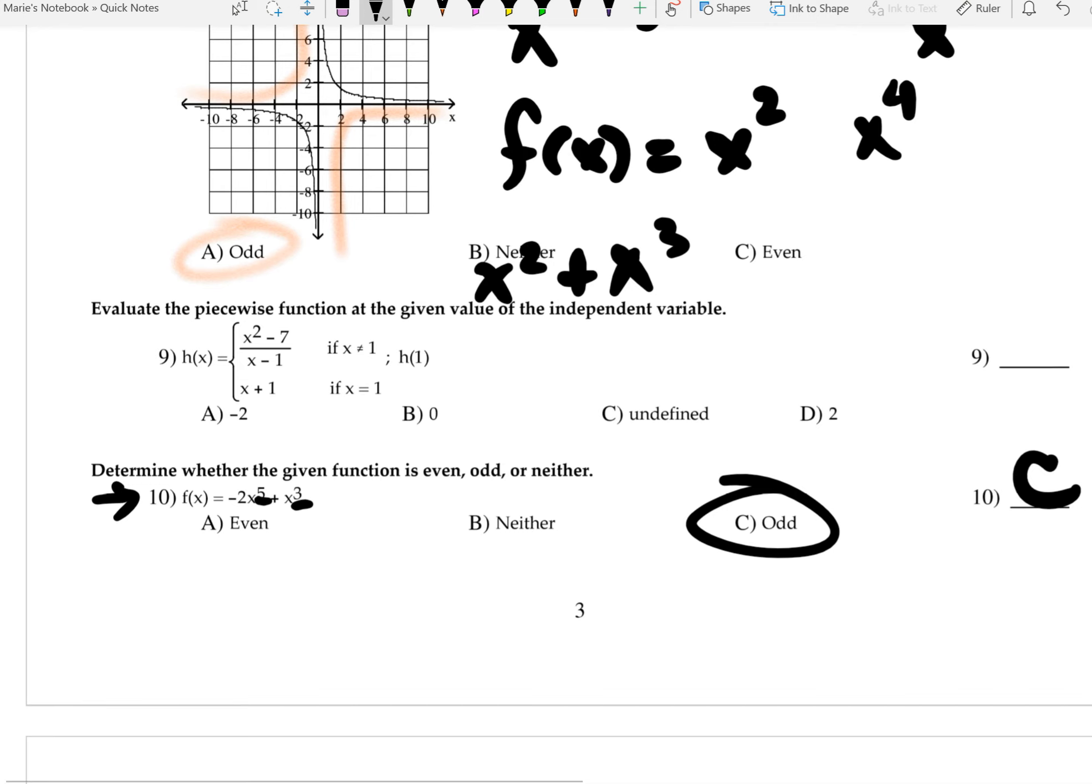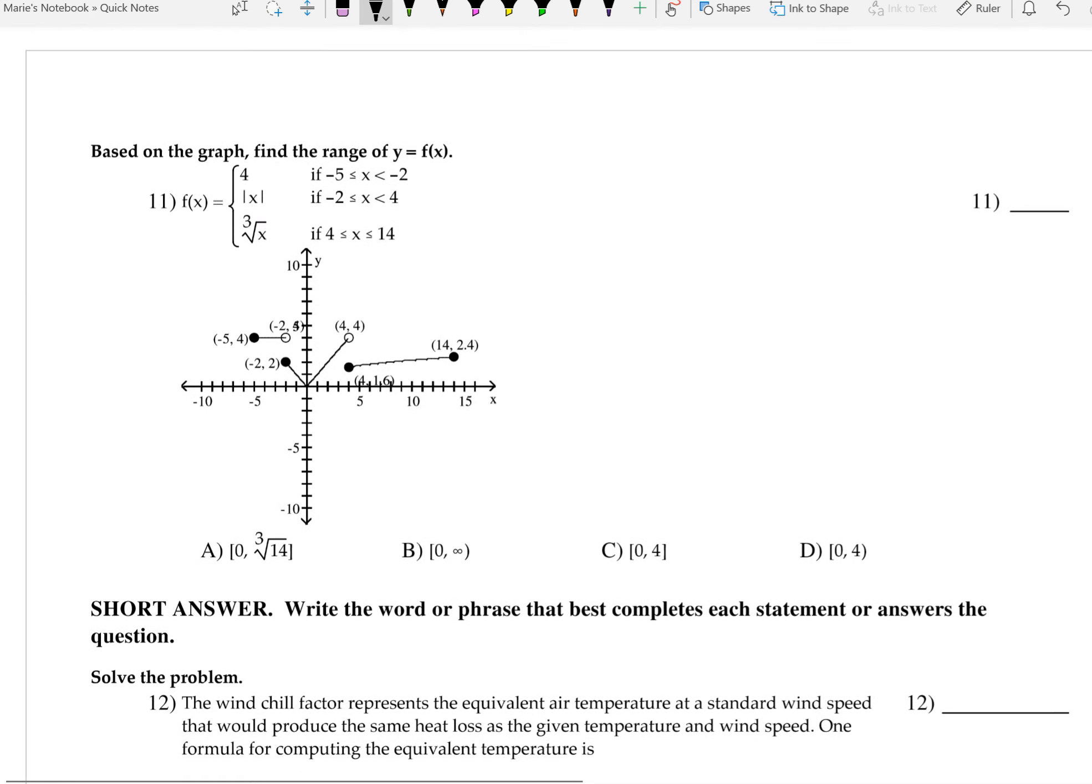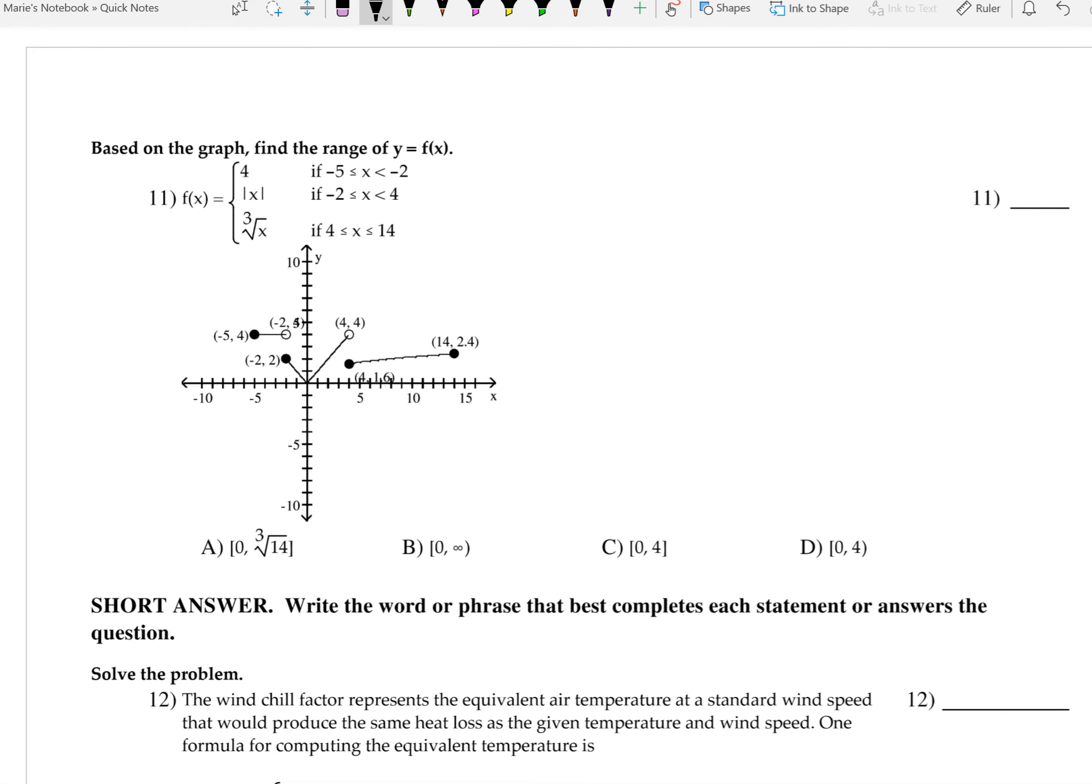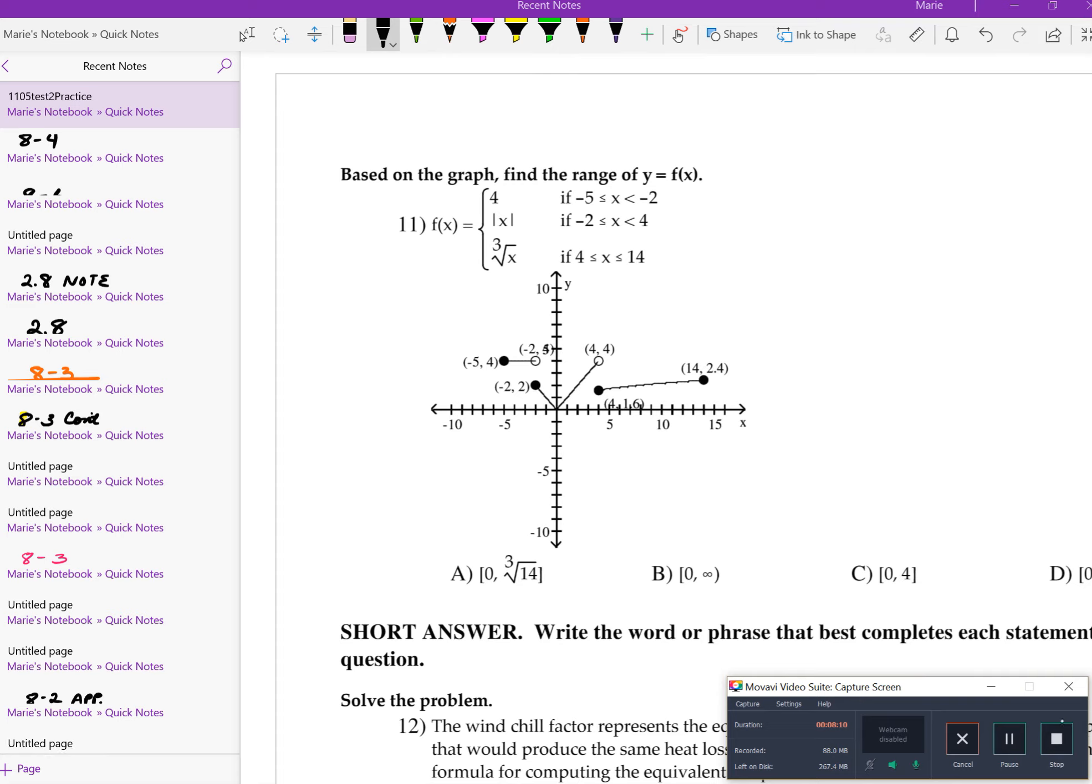All right, evaluate piecewise function given the value of the independent variable. Here's the issue. They're telling you it's H of 1. The only place where X equals 1 is here, which means that I'm going to use this particular function. It's as easy as 1 plus 1. That's the first 10 questions. I'm going to stop the video here to not let it run too long, and I hope this is helpful.